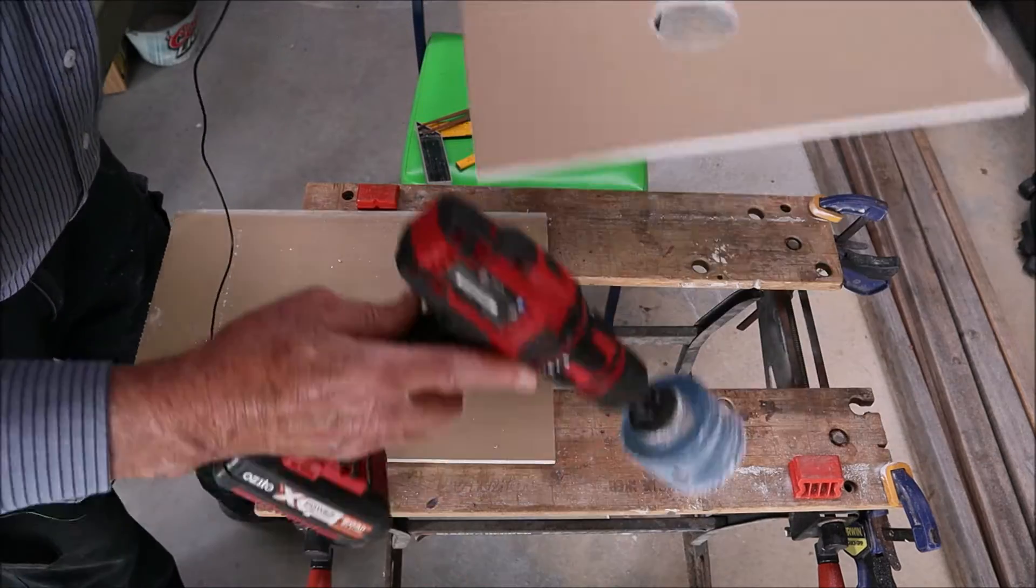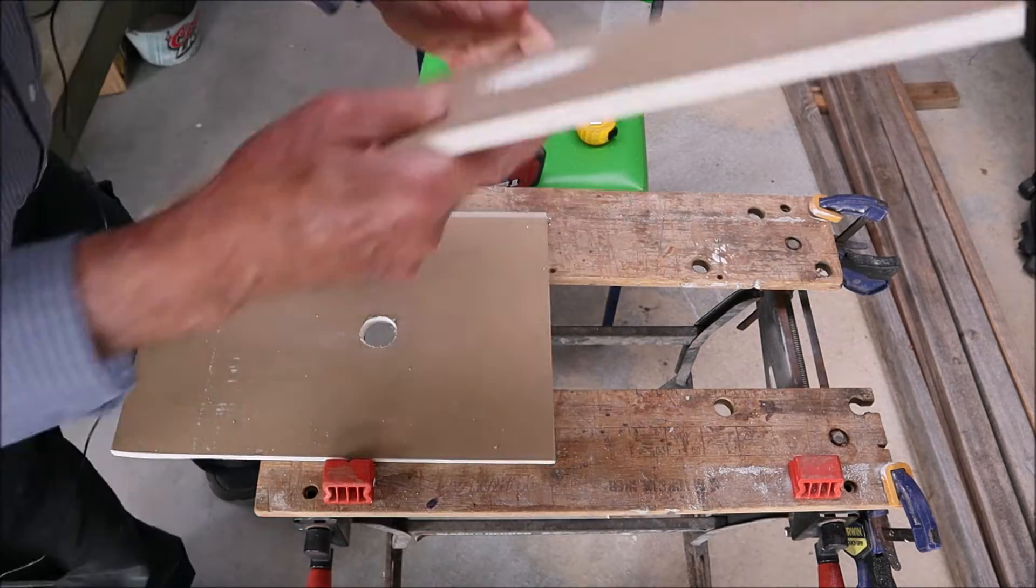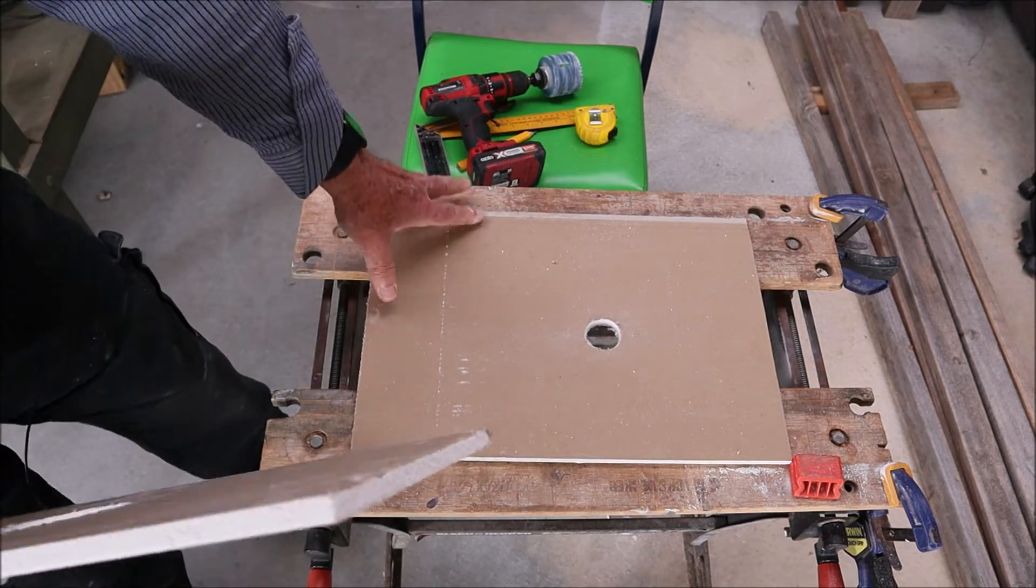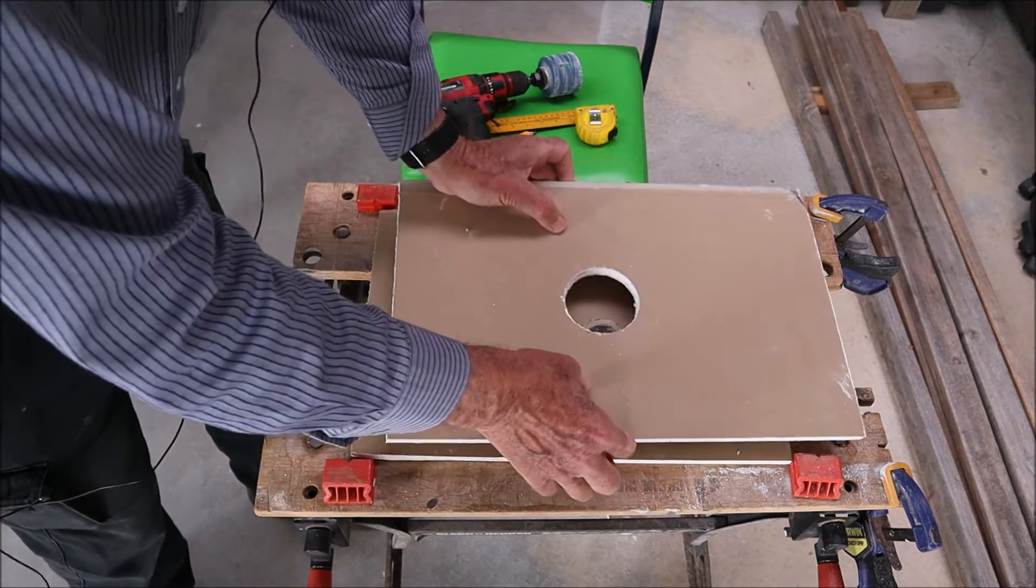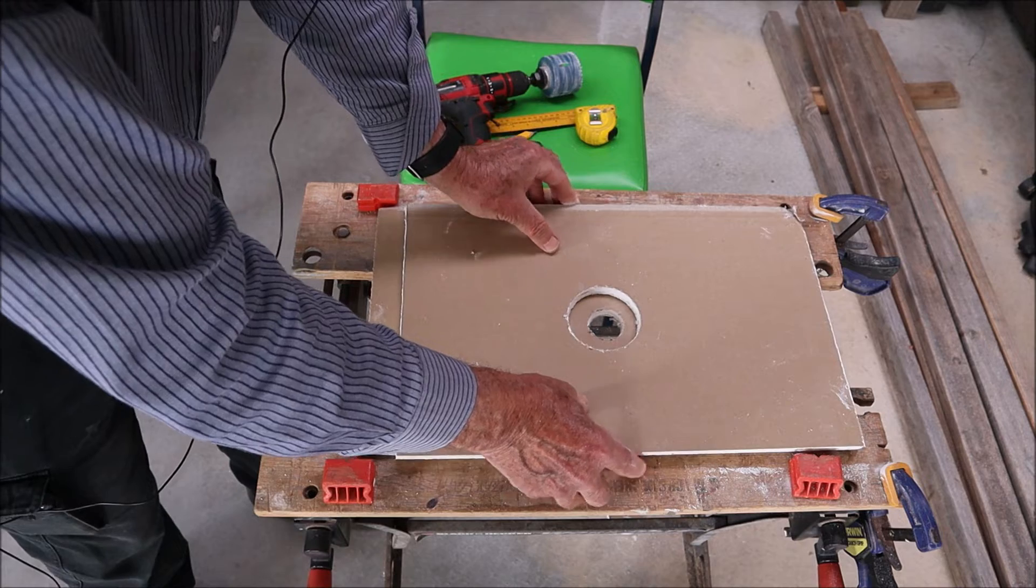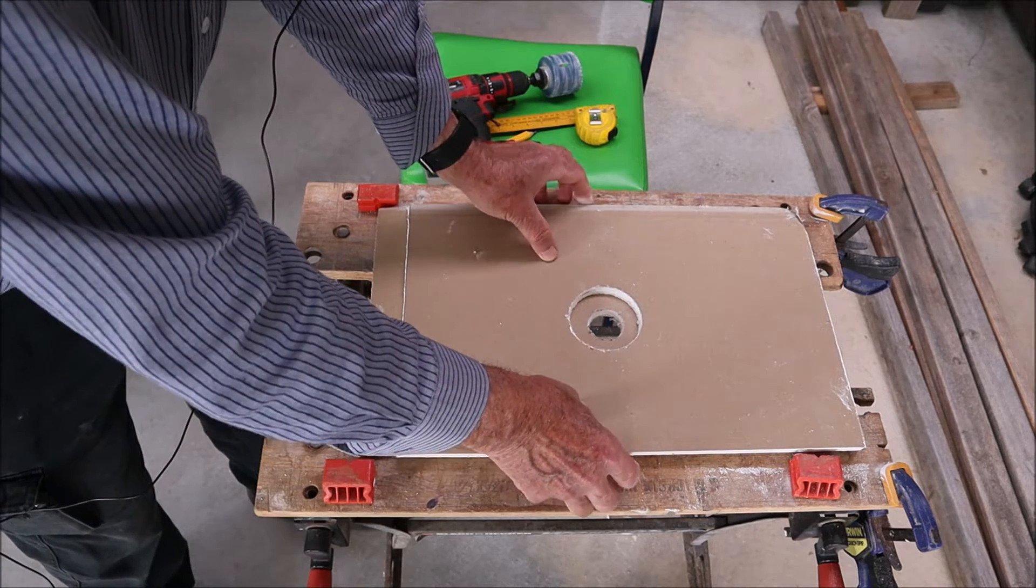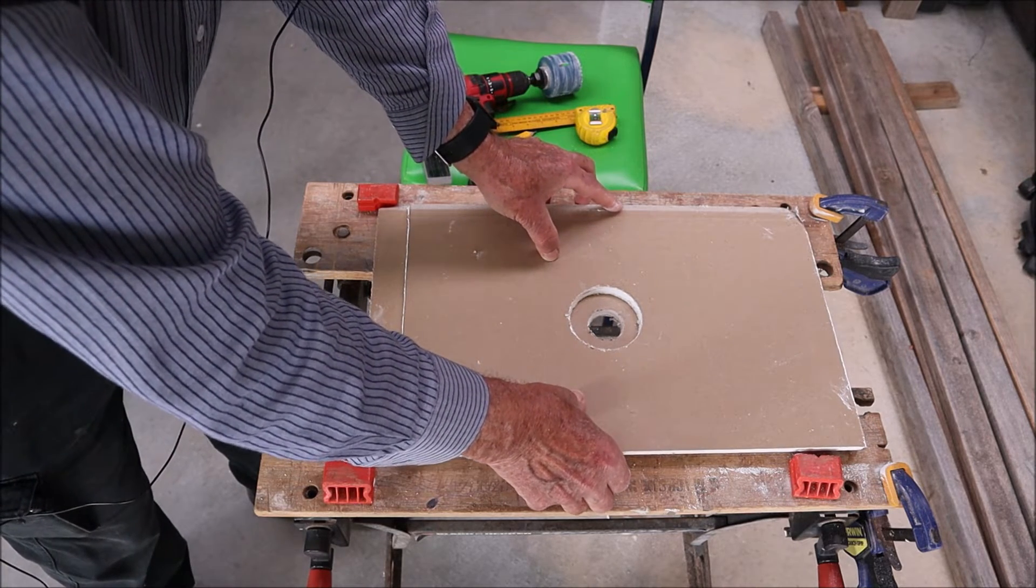And this is going to act as a guide for our new hole saw. Now the next thing we have to do is try and position it centrally over the old hole so that we get the old hole and the new hole in the right place. You can eyeball it pretty accurately like that, but if you're a bit worried...